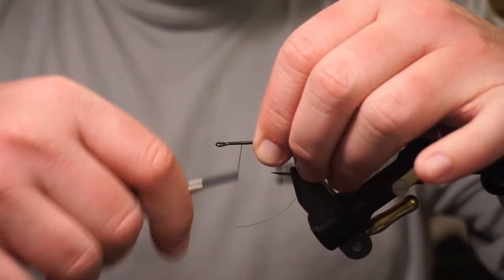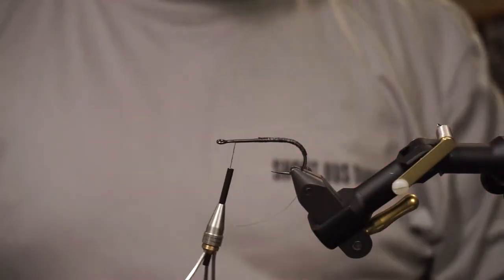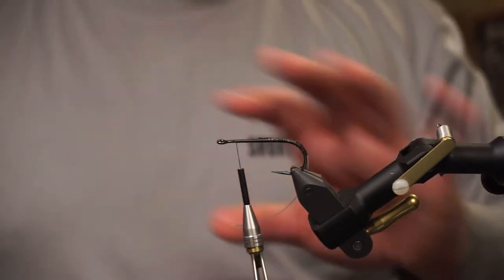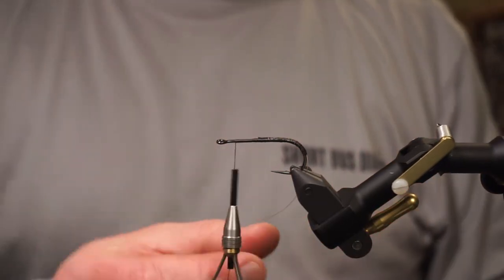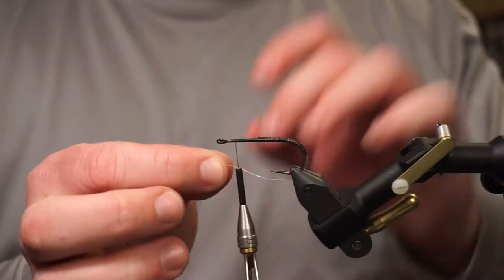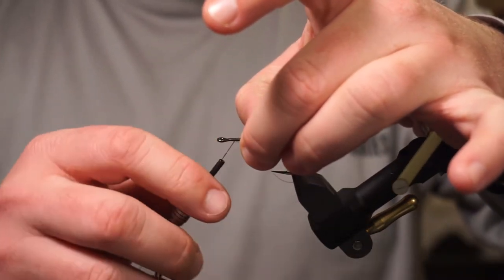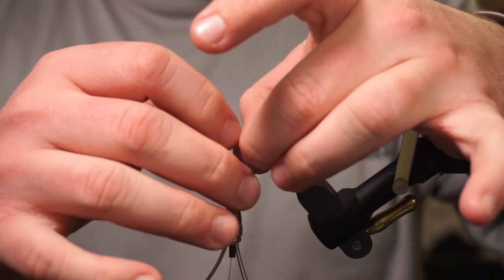For this video I'm just showing you the weed guard, so we're going to get back up towards the front. You would have your fly finished and be ready to whip finish, but we're going to take the other end of the weed guard, pull it up, and tie that off.